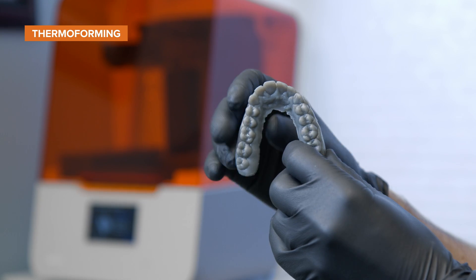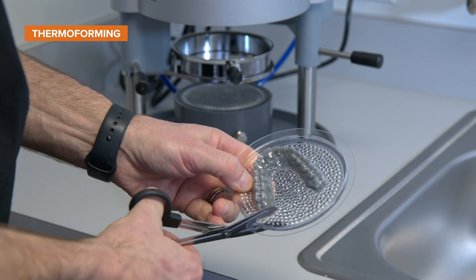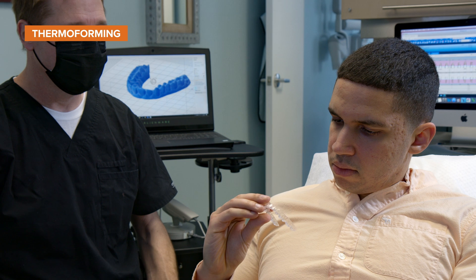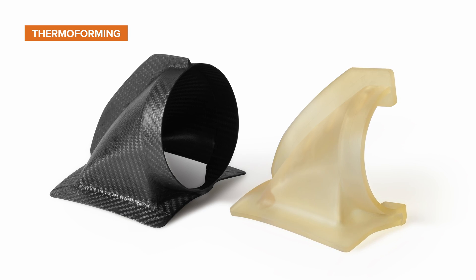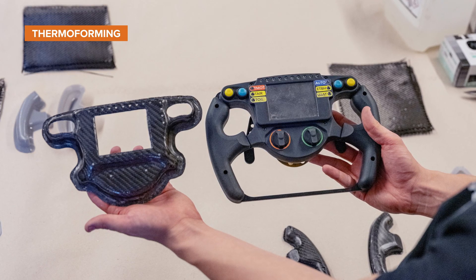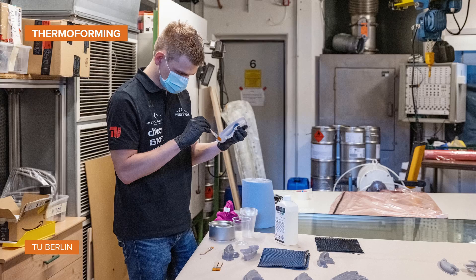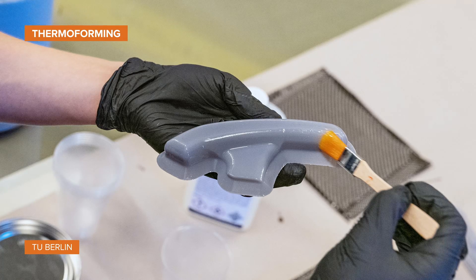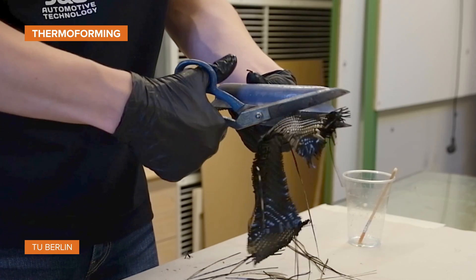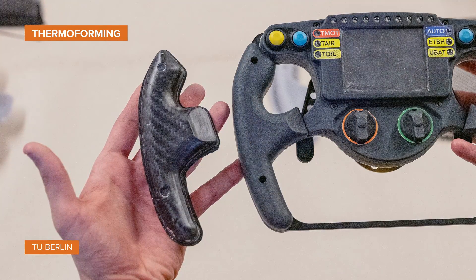3D printed rapid tooling is also ideal for cost-effectively manufacturing custom or customized end-use parts. For example, vacuum forming over 3D printed models is the go-to method for producing clear aligners in orthodontics. High-performance composite materials such as carbon fiber can also be molded on 3D printed tools due to the smooth surface finish of SLA printers, which is essential for layup molds. The Formula Student team of TU Berlin hand laminates carbon fiber parts on 3D printed molds for racing cars. Printed with Tough 1500 resin, the mold is not only strong and supportive during the layup, but also sufficiently flexible to separate the part from the mold after curing, unlocking design possibilities.